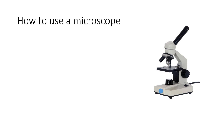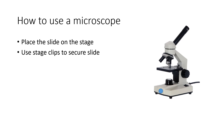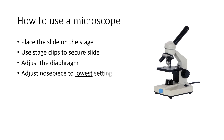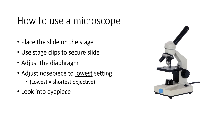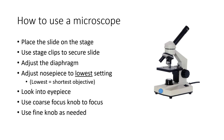How to use a microscope. Place the slide on the stage. Use stage clips to secure the slide. Adjust the diaphragm. Adjust the nose piece to the lowest setting, which means the shortest objective lens. Look into the eyepiece or the ocular lens. Use the coarse-focus knob. Use the fine knob if needed.